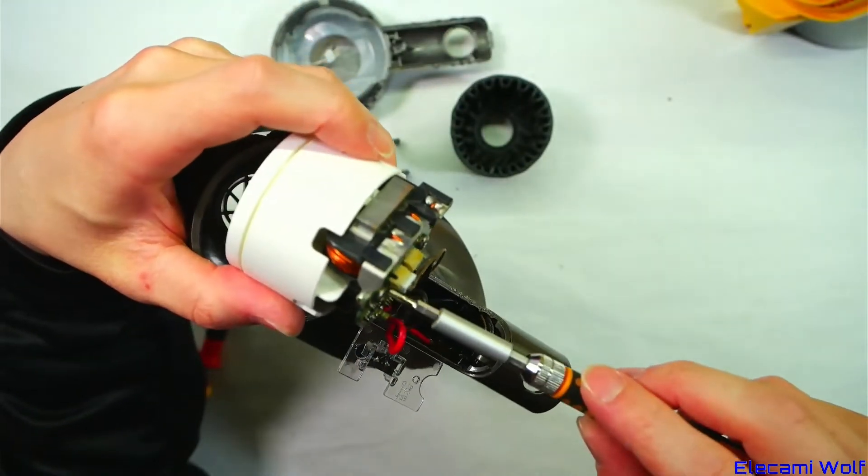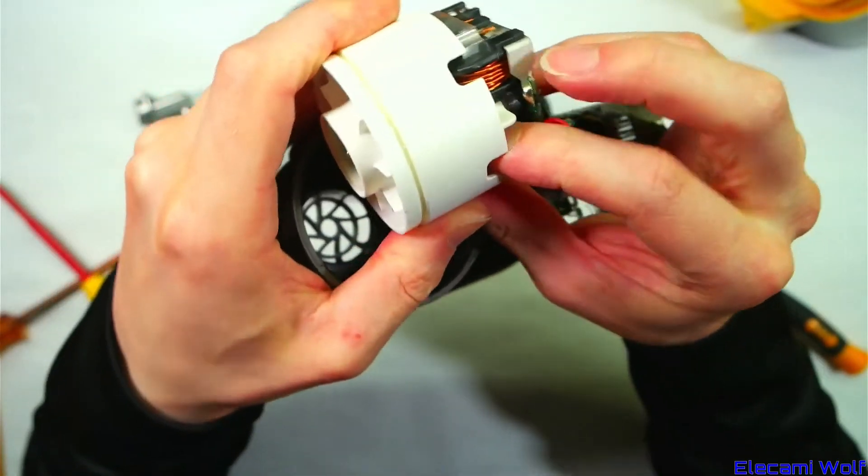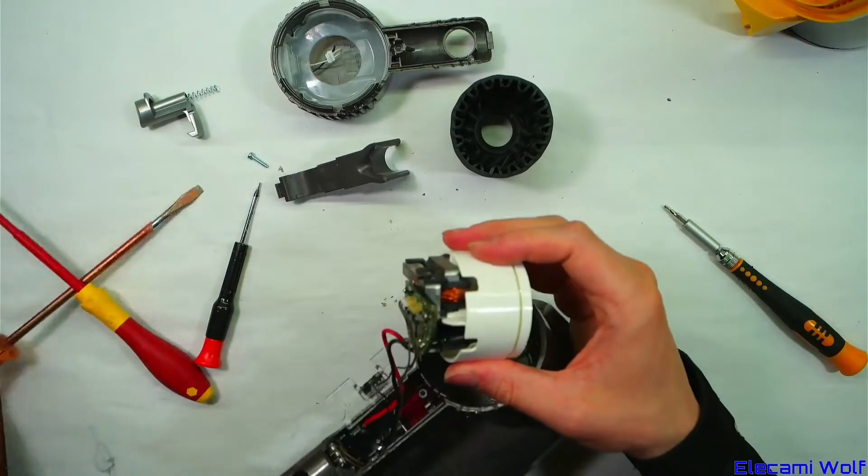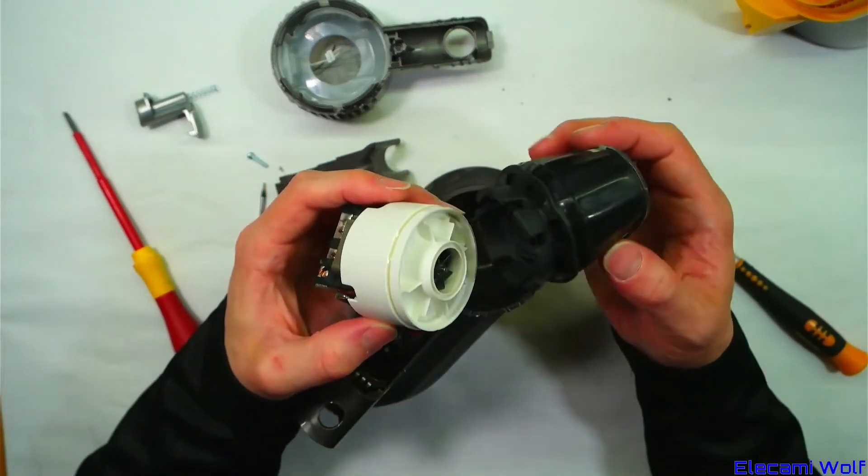I don't know if it's worth trying to take these screws off. We'd have to cut through the glue that's holding the capacitors. Otherwise it won't come off, the capacitors will hold it. I don't really want to wreck this, so perhaps we'll put it back together and try not to wreck it while putting it back together.